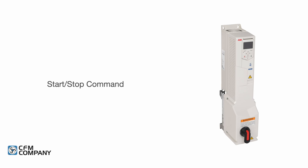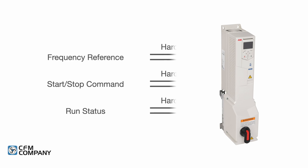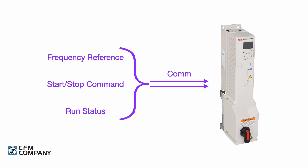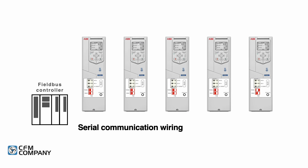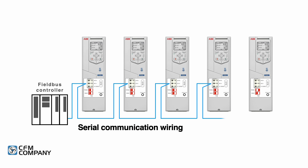Depending on the building automation control sequence, the start-stop command, frequency reference, and status can be either hardwired, sent over serial communications, or a combination of both. The advantage of using serial communications is that the VFD control can be accomplished using a single pair of communication wires.